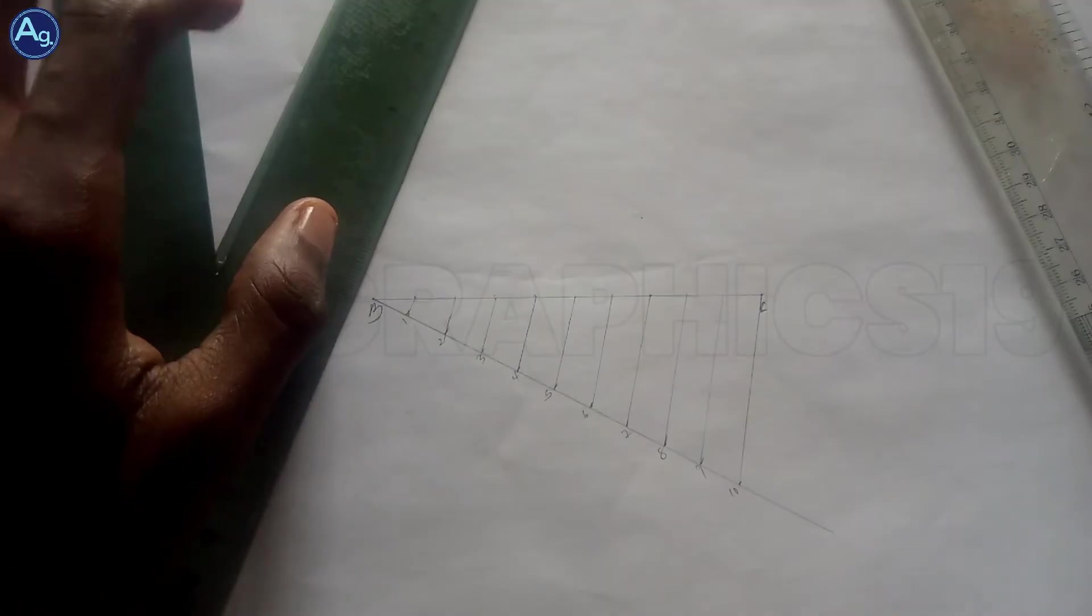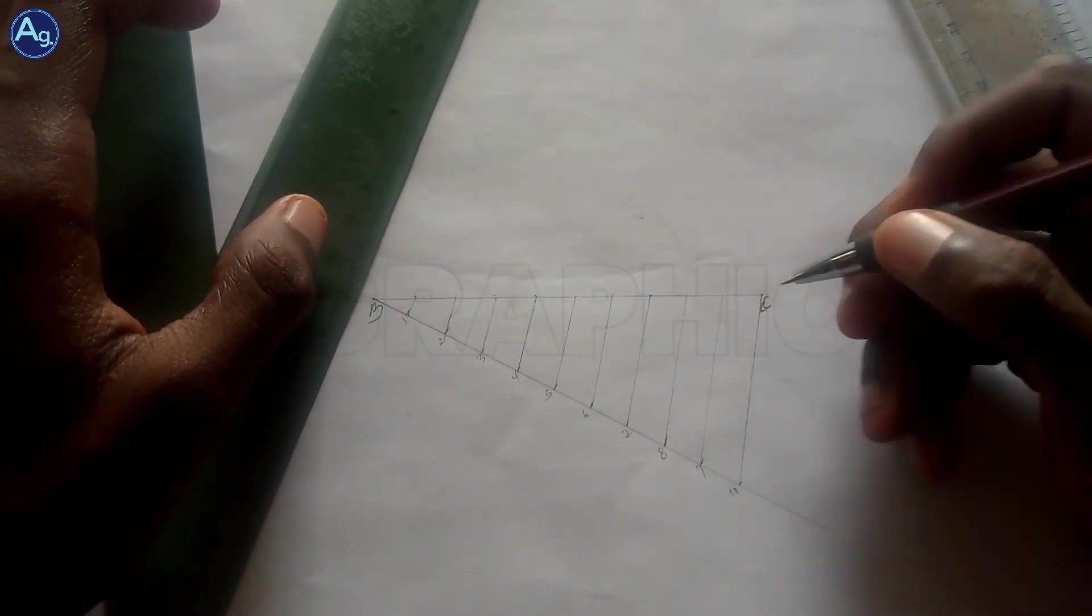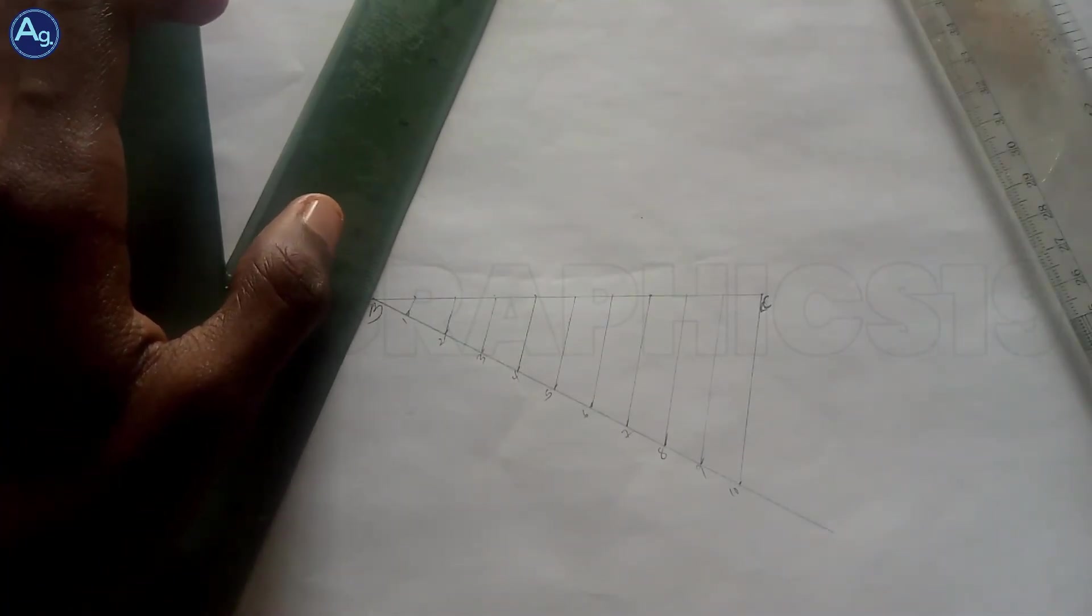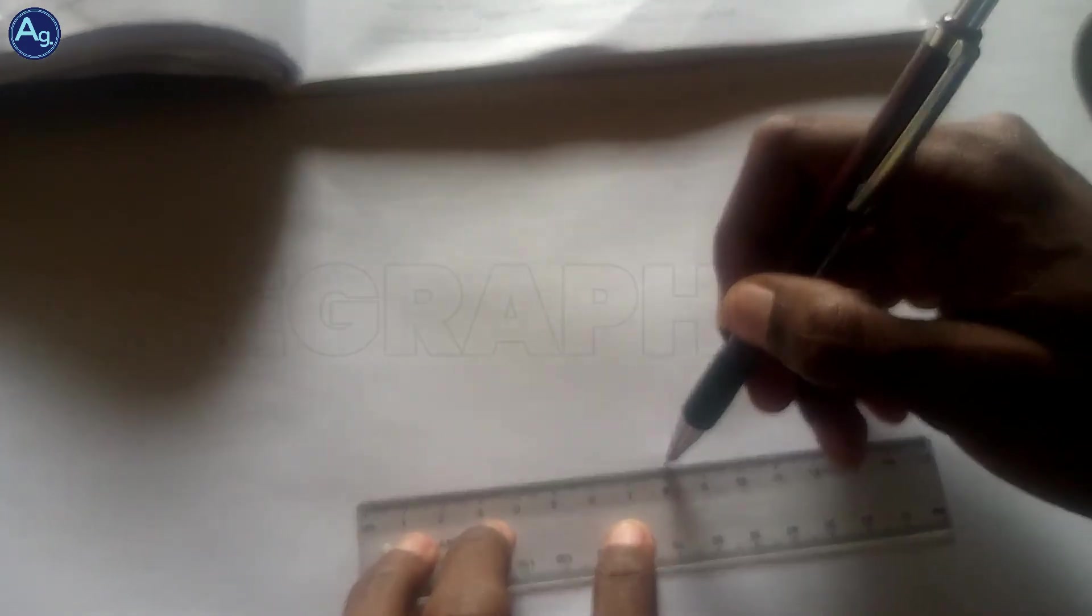So we've successfully divided this line AC into 10 equal parts.